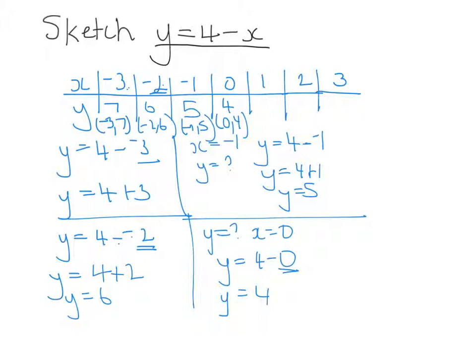Now, we can continue on with this. So, what about if x is equal to 1, what would y be equal to? So, 4 minus 1, y would be equal to 3. So, when x equals 1, y would be equal to 3.